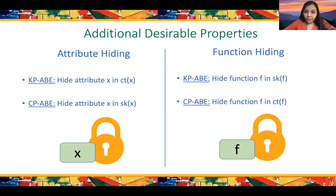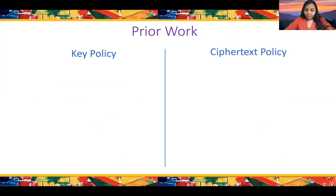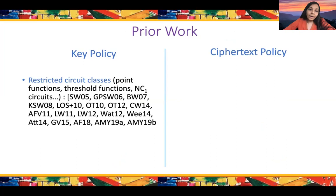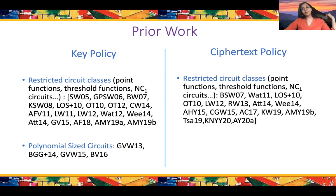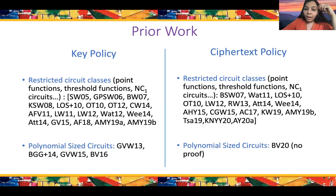Prior work in this area can be summarized as follows. In the key policy setting for restricted circuit classes ranging from point functions to NC1 circuits, there has been a long range of elegant constructions. A big breakthrough was by Gorbunov, Vaikuntanathan, and Wee, who provided the first construction of key policy ABE for all polynomial-sized circuits, with improvements in follow-up work. In the ciphertext policy setting for restricted circuit classes, the story is similar, with constructions from pairings or learning with errors. For all polynomial-sized circuits, the story is significantly worse: we only have one candidate construction by Brakerski and Vaikuntanathan, and this is a heuristic with no security proof.